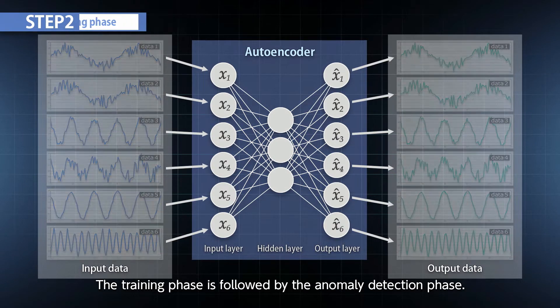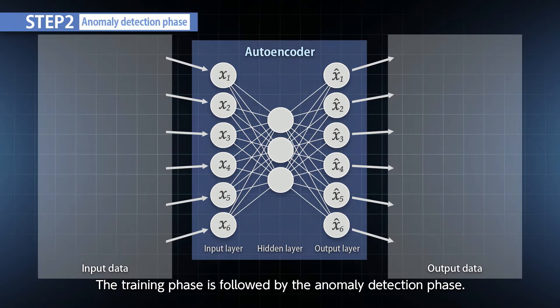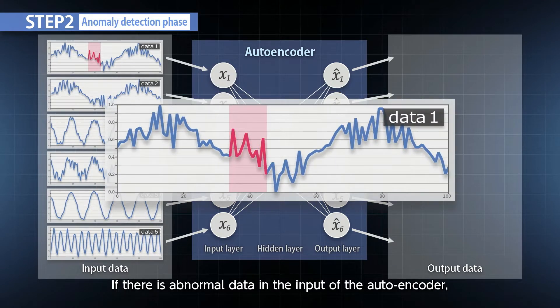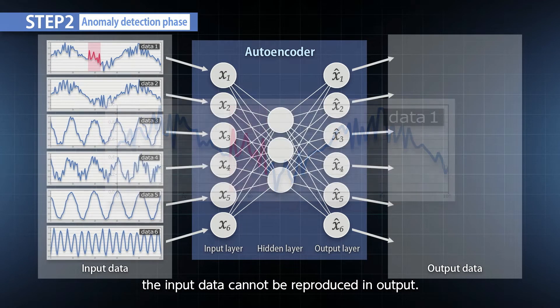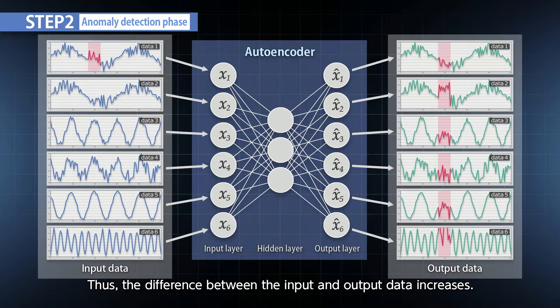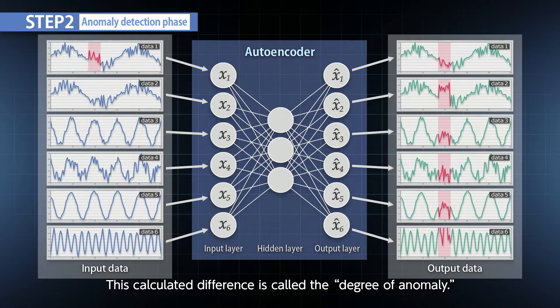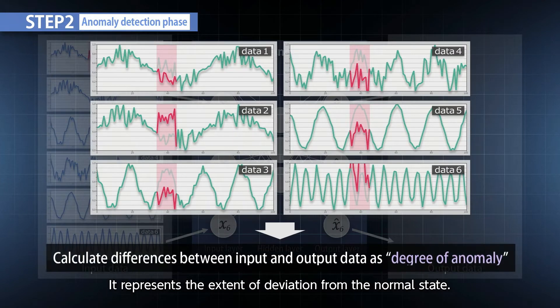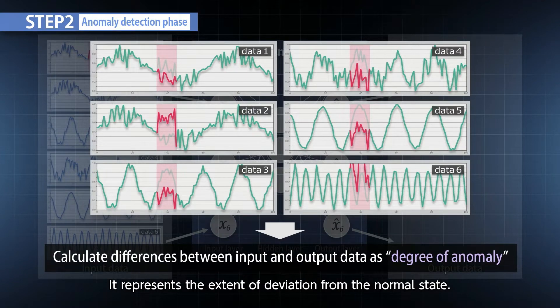The training phase is followed by the anomaly detection phase. If there is abnormal data in the input of the autoencoder, the input data cannot be reproduced in output. Thus, the difference between the input and output data increases. This calculated difference is called the degree of anomaly. It represents the extent of deviation from the normal state.